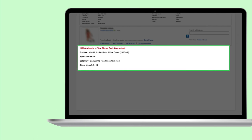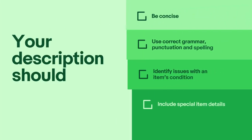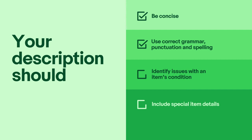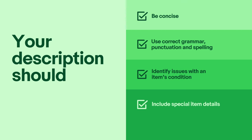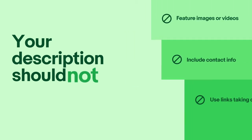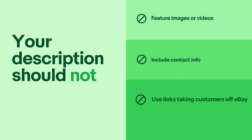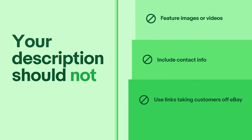Now let's talk about descriptions. The description section is where you can add more enticing, relevant details about your item. Descriptions should be concise, use correct grammar, punctuation, and spelling, identify any issues with the item's condition, and include special item details. Descriptions should not feature videos or active content, include contact info, or use links taking customers off eBay.